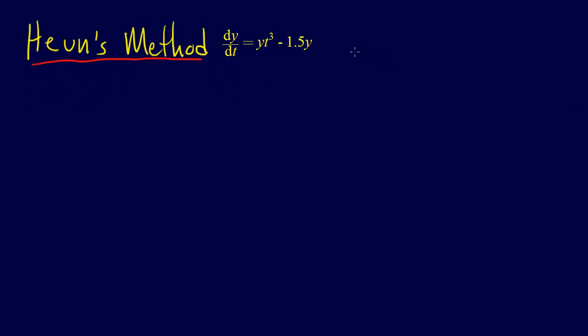And so Heun's method again is one of the Runge-Kutta methods, so without iteration, right? Heun's method without iteration. And y₀ equals 1. But in general, the Euler's methods are yᵢ₊₁ equals yᵢ plus φh.